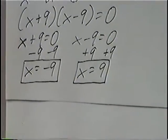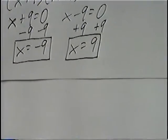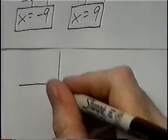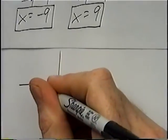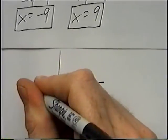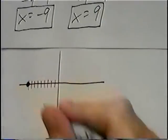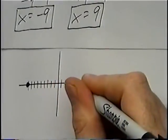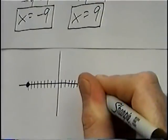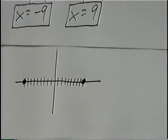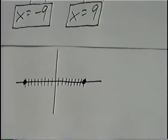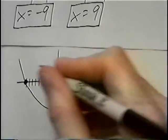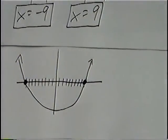We can graph these solutions by drawing the xy-axis. Our first answer, negative 9, places a point at negative 9 on the x-axis, and the y value would be 0. X equals 9 is our second solution. Since this is a quadratic equation with positive x squared, the shape of the graph is a parabola. We draw a parabola going through both points, opening upward.